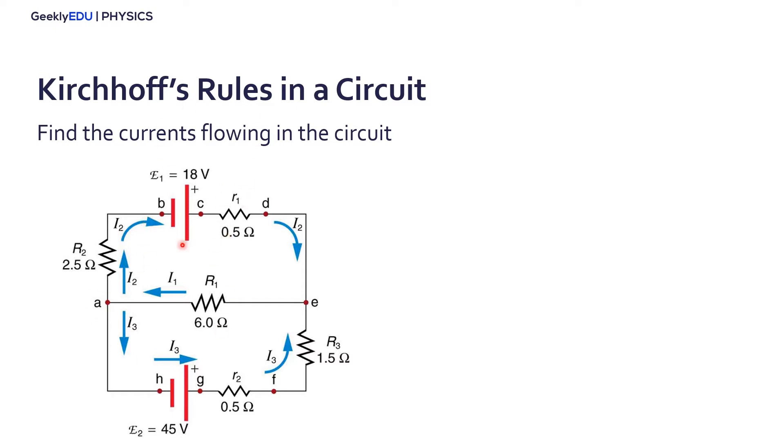So we already know the tensions here, the resistances. These small r's are the internal resistances. We want to find I1, I2 and I3.